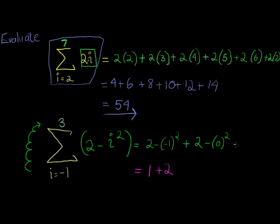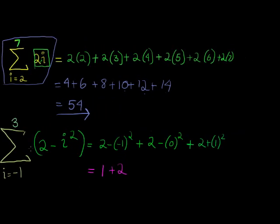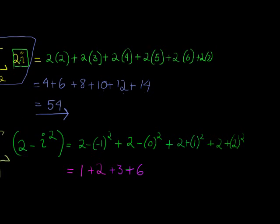And the next number is when i is equal to 2. I'm not at 3 yet. So 2 plus 2 squared is 4. That's when i is equal to 3. That's when I'm going to stop. So plus 2 plus 3 squared. And that answer gives me 3 squared is equal to 9 plus 2 is 11.